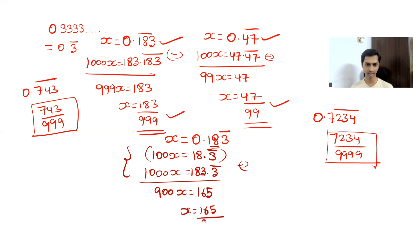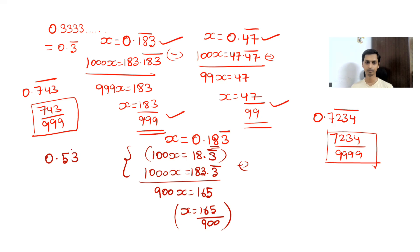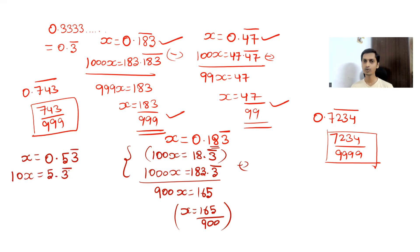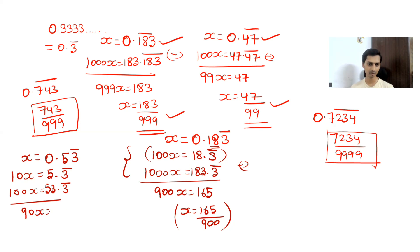Another example: 0.53 bar where only 3 repeats. Assign x = 0.53 bar. Multiply by 10 to move the non-repeating 5 before the decimal: 10x = 5.3 bar. Then multiply by another 10: 100x = 53.3 bar. Subtract: (100 − 10)x = 90x = 53 − 5 = 48, so x = 48/90.